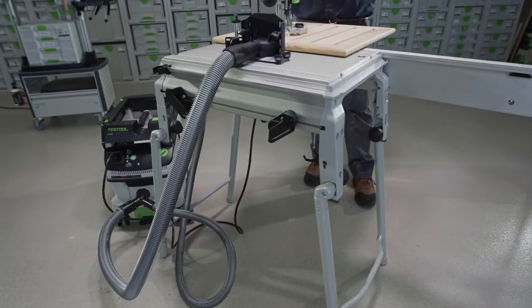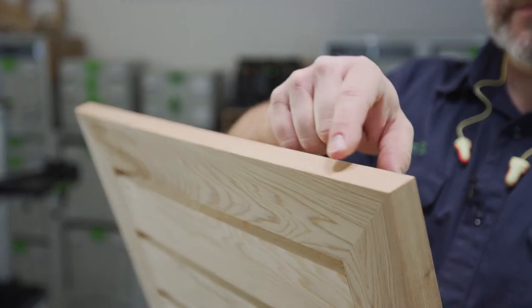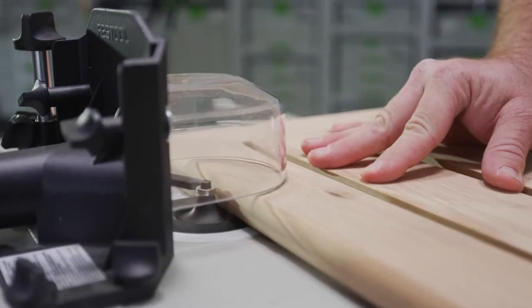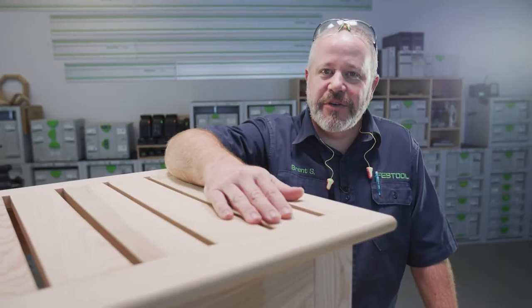So in this episode, we're going to utilize the CMS and the OF1400 router with a roundover bit to soften the entire outside edge of our tabletop. Let's get to it.